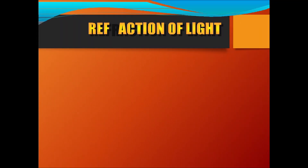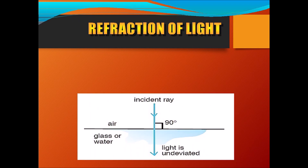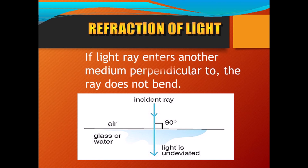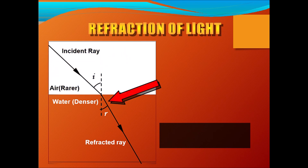Moving on — an important point about refraction of light. We saw that when a ray of light falls obliquely it gets refracted and bends. But what happens when a ray of light falls perpendicular, at 90 degrees, to the transparent medium? When the ray of light is going to fall perpendicular or at 90 degrees, this light will not bend — it will go straight, undeviated. Only when the ray of light falls obliquely is it refracted and deviated.